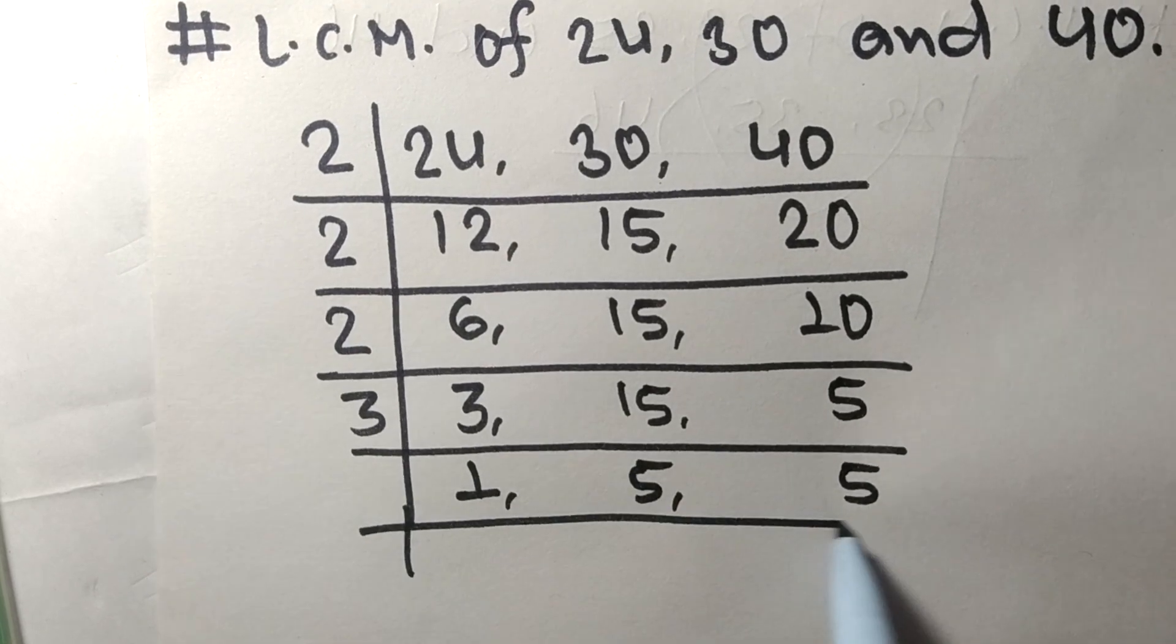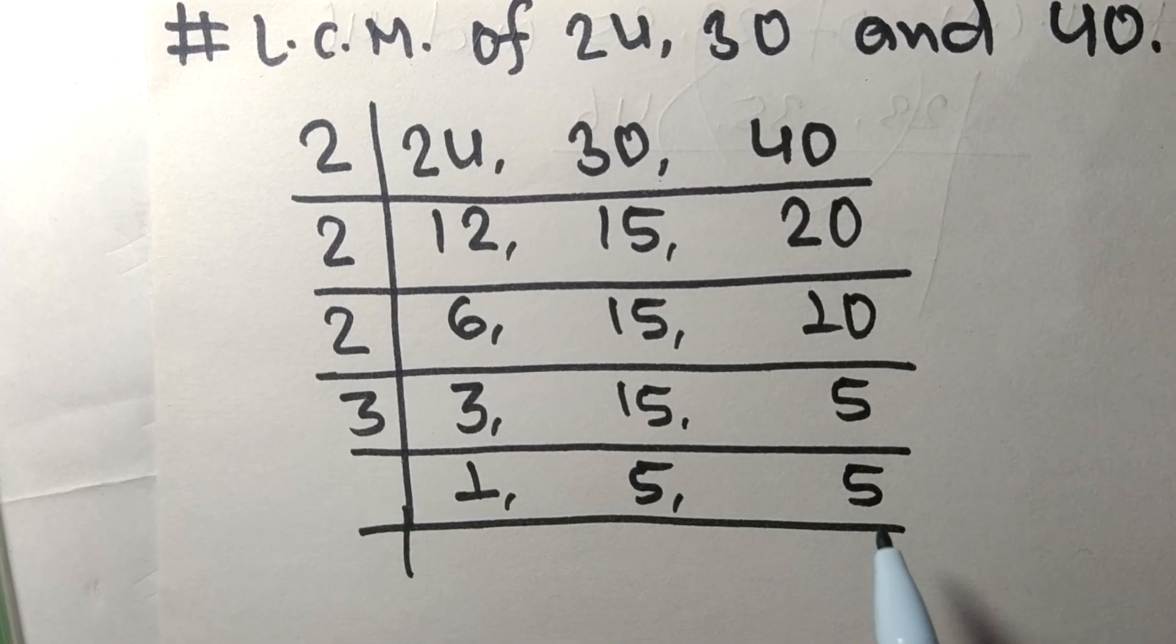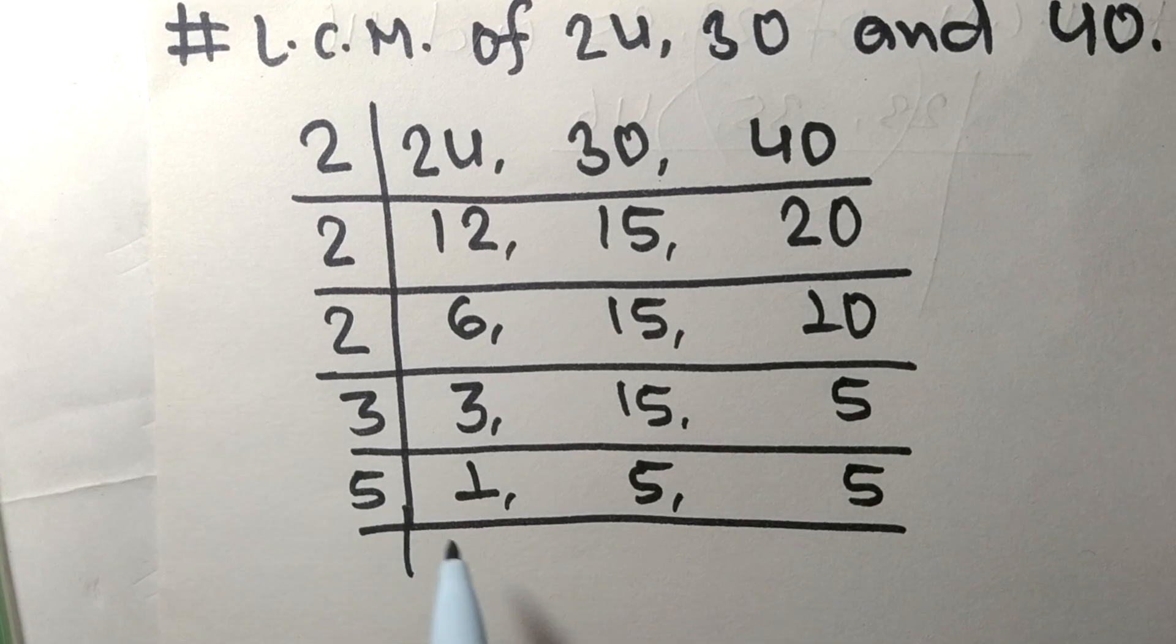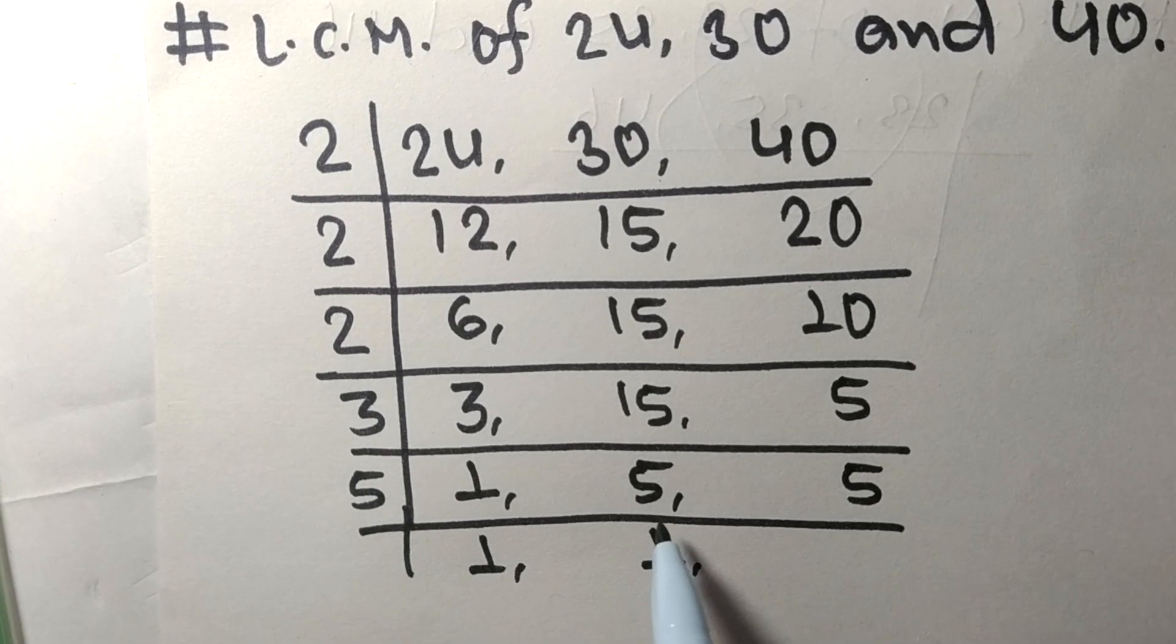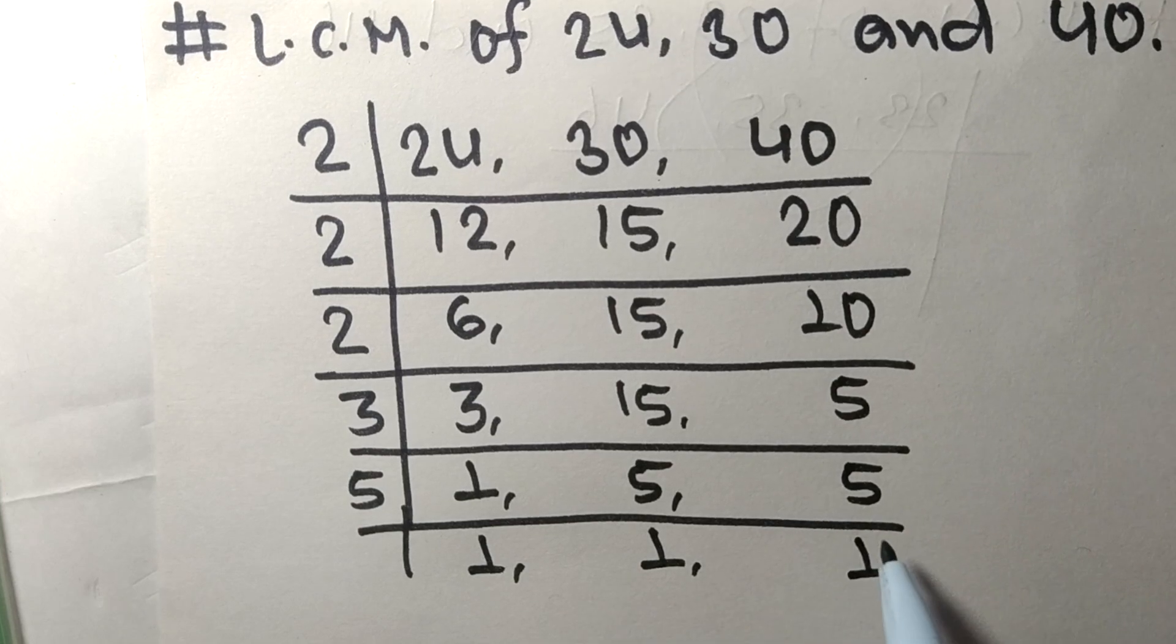These two 5s are divisible by 5. 1 stays the same, 5 times 1 means 5, 5 times 1 means 5.